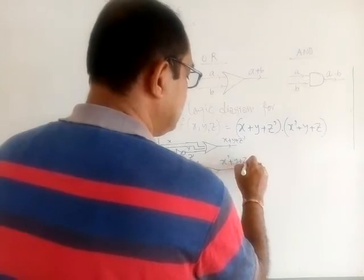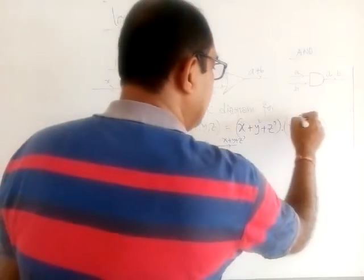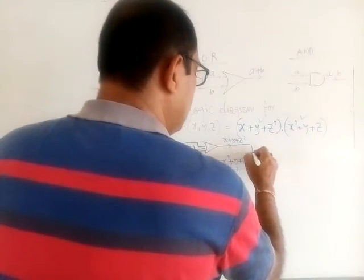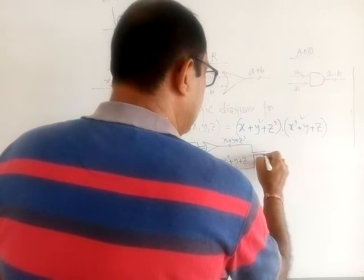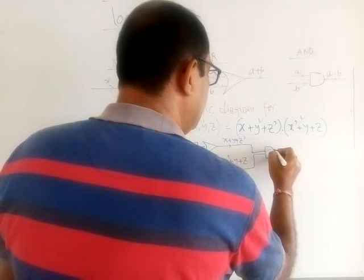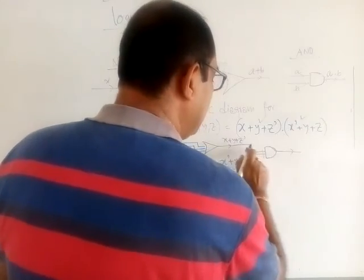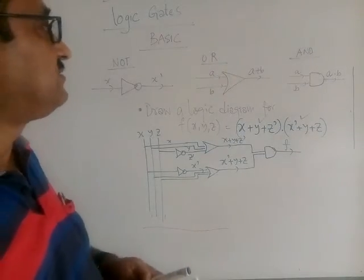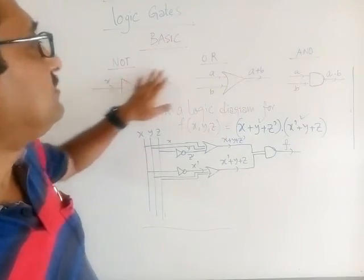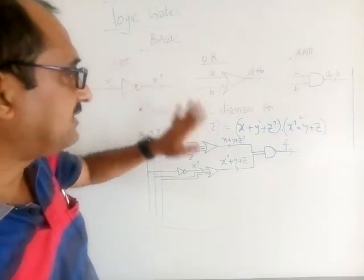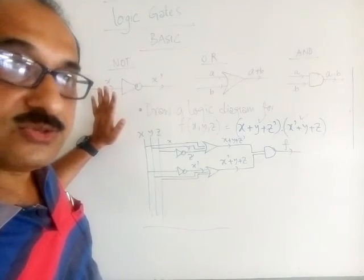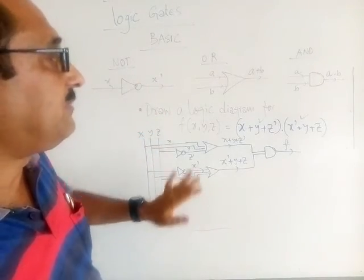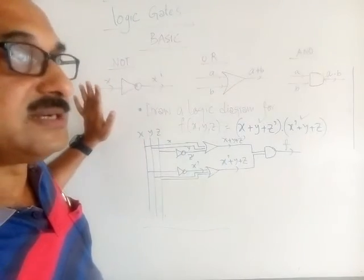So the OR gate gives me x plus y plus z complement. I got that current, and now I need a dot sign to combine it with another term. I bring the two outputs close together and pass them through an AND gate — whatever I pass through an AND gate, I get the dot of the two terms. That is how I get the final output F. This is how we can draw simple circuit diagrams using gates. Today I will not tell you much more — you have to watch yesterday's video along with today's notes.